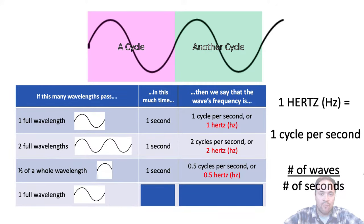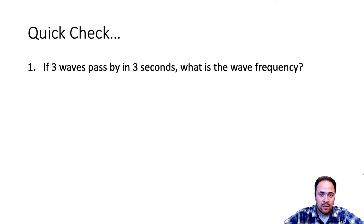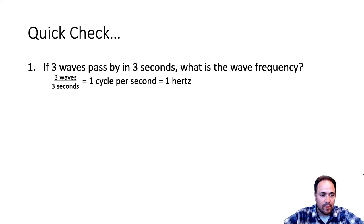Similarly, one full wavelength in two seconds also works out to 0.5 cycles per second, or 0.5 hertz. Taking the number of waves divided by the number of seconds gives you the frequency in hertz. For practice: if three waves pass by in three seconds, we take three waves divided by three seconds, giving us one cycle per second, or one hertz.